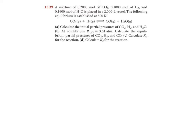We have carbon dioxide reacting with hydrogen gas in equilibrium with carbon monoxide and water vapor. So part A says calculate the initial partial pressures of carbon dioxide, H2 and H2O. To do that, we have to use PV=nRT.